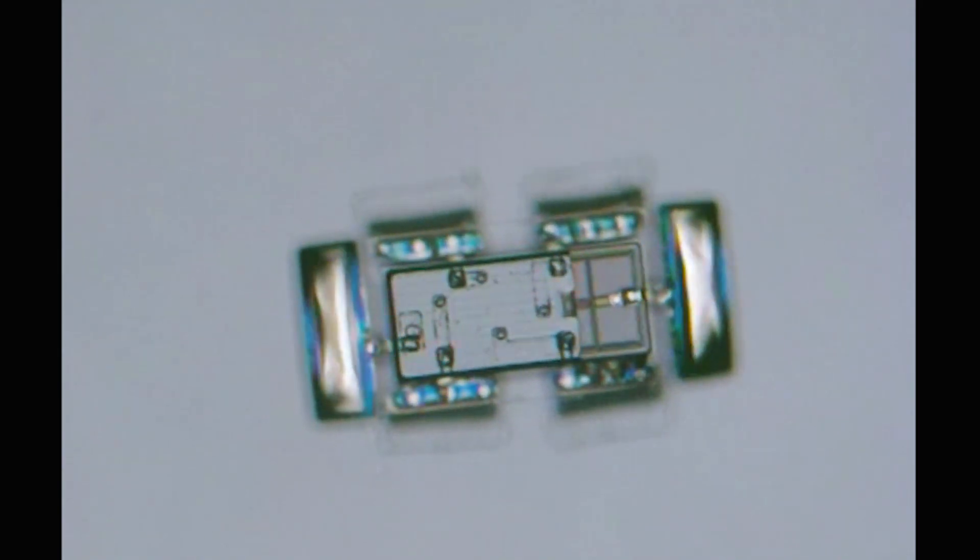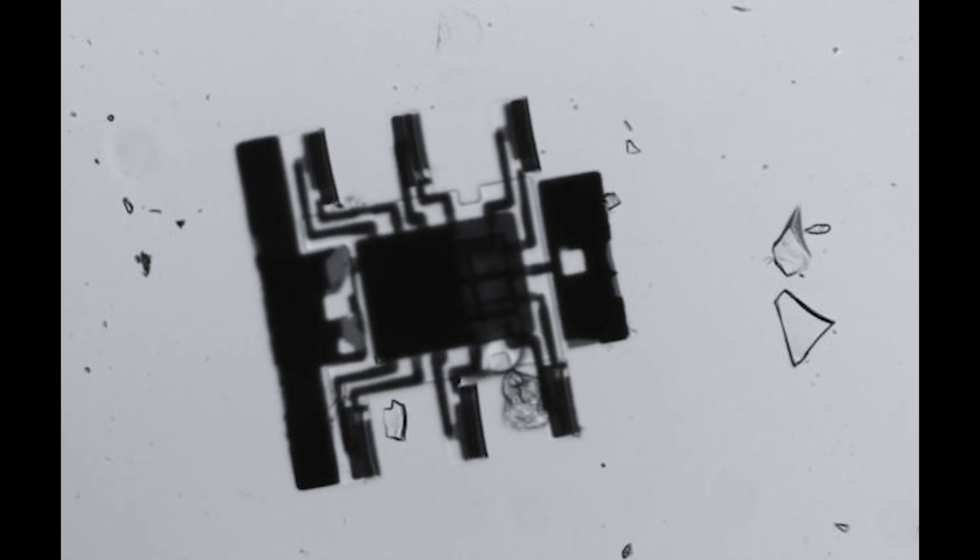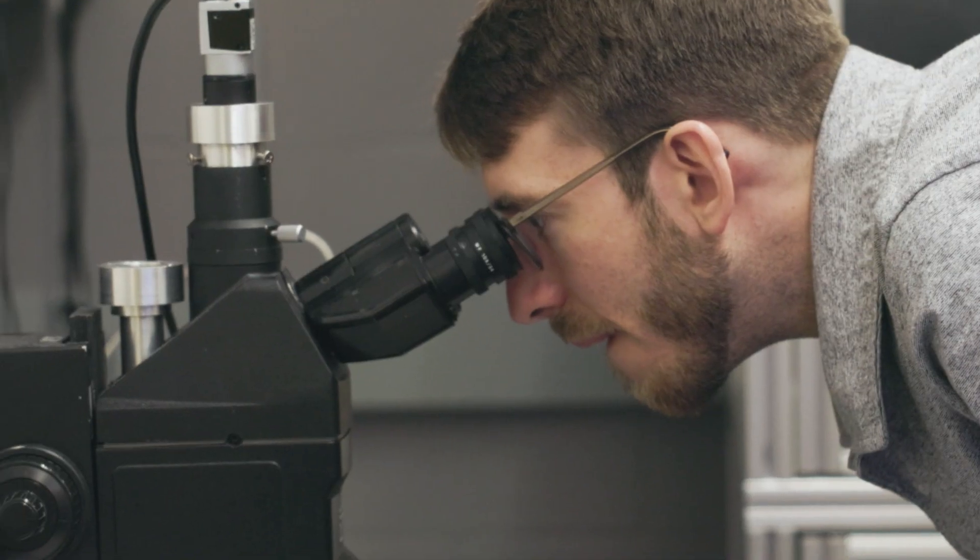The robots I work on are smaller than you can see by your naked eye, about a hundred microns in size—roughly the width of a human hair.